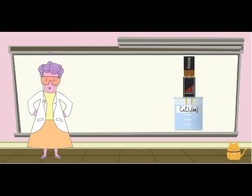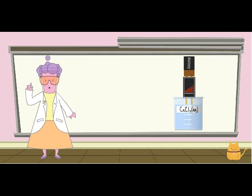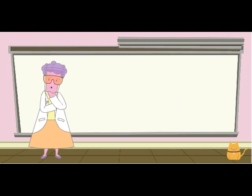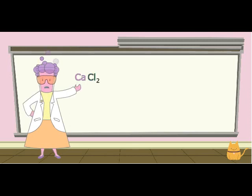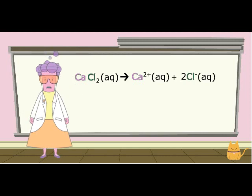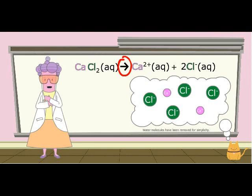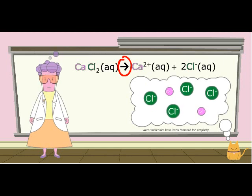An aqueous solution of calcium chloride conducts electricity very well, which means that it exists nearly completely as dissociated ions. We can write an equation for the ionization of aqueous calcium chloride as CaCl2AQ arrow Ca2+ AQ plus 2Cl- AQ. The single arrow means that the solute dissociates completely or nearly completely in the solvent water.